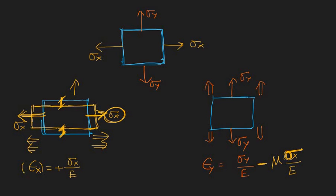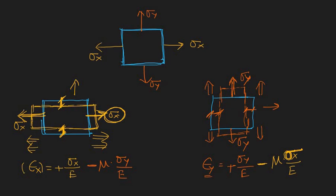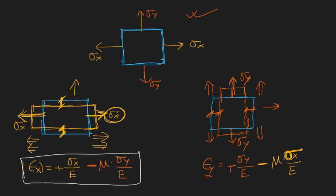Similarly, due to sigma_y it will elongate along the y-axis — so it has a positive effect sigma_y — but along the x-axis it has contracted. So there is a negative effect: minus mu times sigma_y by E. So due to this biaxial stress system you have the combined strain formulas: the total strain along x-axis and the total strain along y-axis. I think you have now understood the basic derivation behind these formulas.